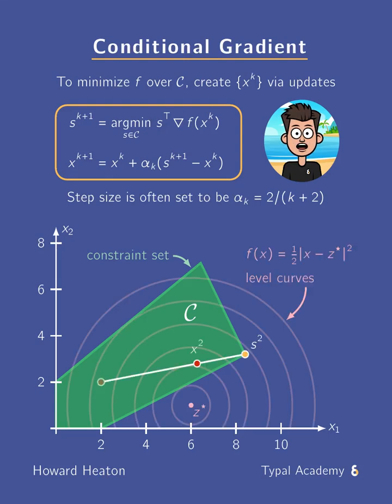The conditional gradient method, also known as Frank-Wolfe, is used to minimize a function f over a constraint set C.